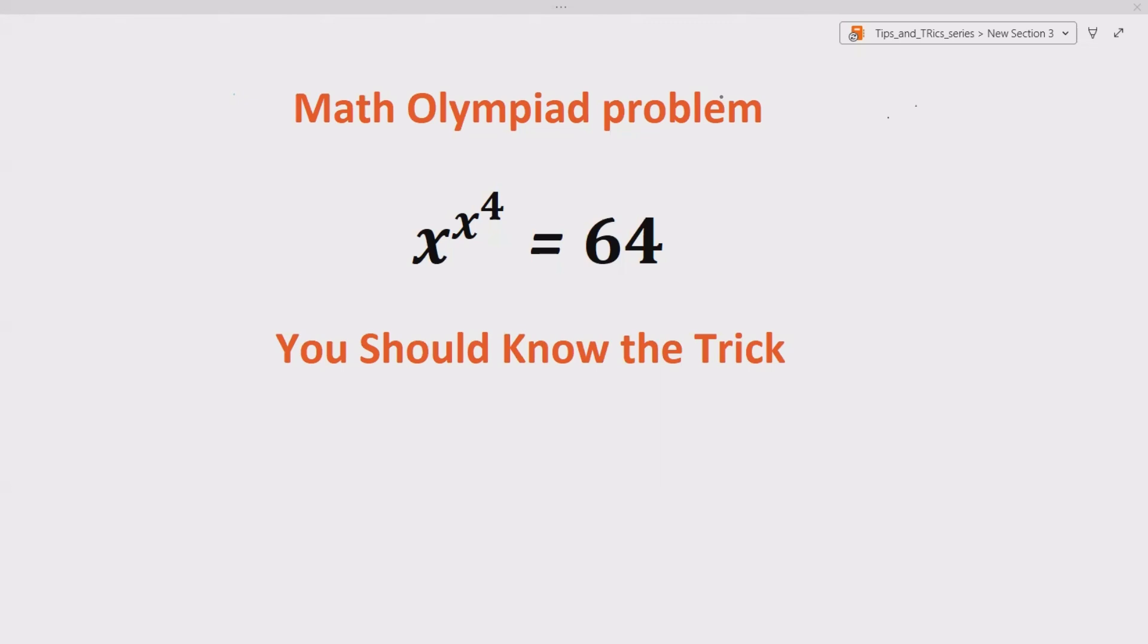Now let's see how we can solve this equation. So we are given x raised to the power x raised to the power 4, which equals 64. So first thing we have to do here is actually do a trick which is let's take power 4 on both sides.